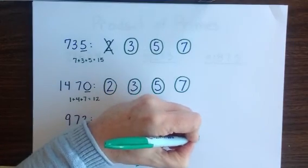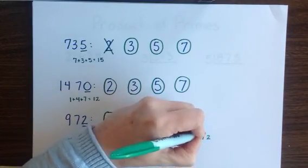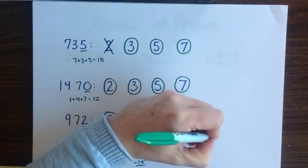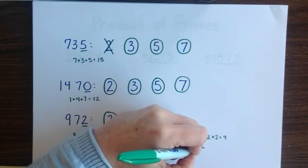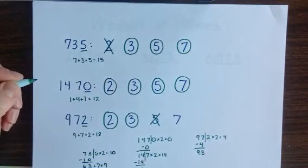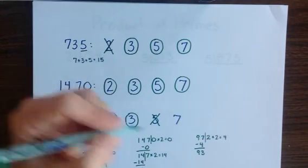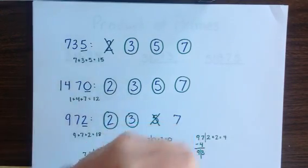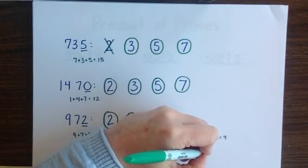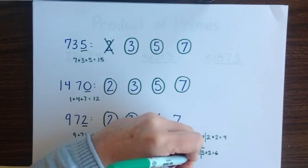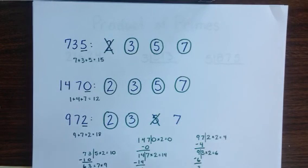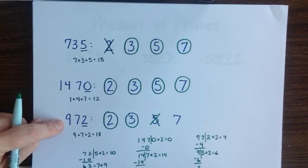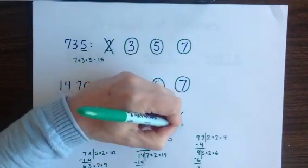And then our final number to check, 972. When we chop off the 2 and double it, we get 4. And subtracting 4 from 97 leaves me with 93. Now I don't know my 7 times tables up that high, so I'm going to do the rule again to see if 93 is a multiple of 7. So I'll double the 3, which gives me 6. And subtracting 6 from 9 leaves me with a remainder of 3. Now since 3 is not a multiple of 7, this tells me that my original number, the 972, is not a multiple of 7.